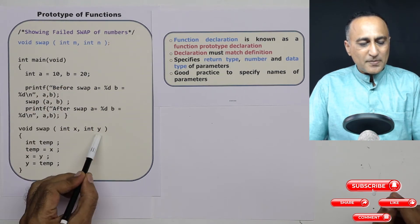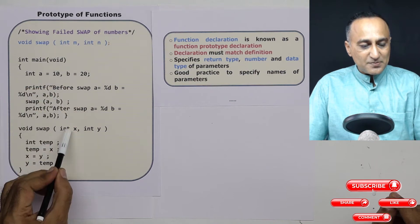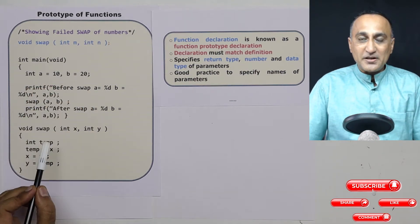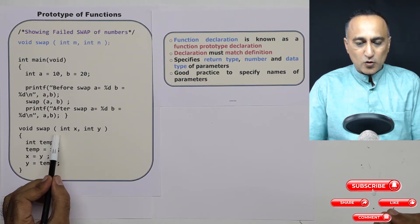The names do not matter whether it is xy, ab here does not matter. But the data types and the number of parameters must be the same in the signature or the function prototype and the actual code.